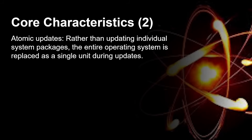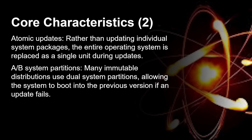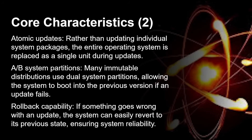Also, atomic updates. Rather than updating individual system packages — which means changing something in the core file system — with atomic updates the whole operating system is replaced in one single update, similar to how a smartphone or tablet installs a new version of firmware. This often uses an A/B system partition: two system partitions, one with the current system and one with the previous one. If an update fails, you still have the previous partition, giving you rollback capability. If something goes wrong, the entire system can be reverted to its previous state so you can still boot up, find out why the update failed, and wait for a fixed update while your system remains usable.